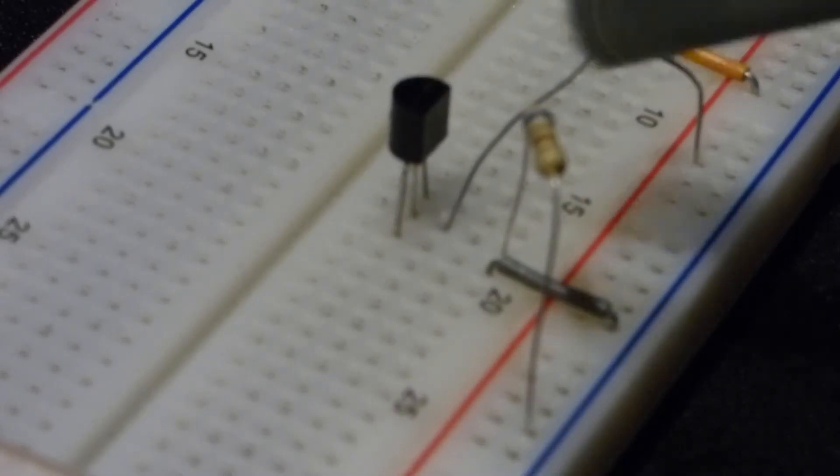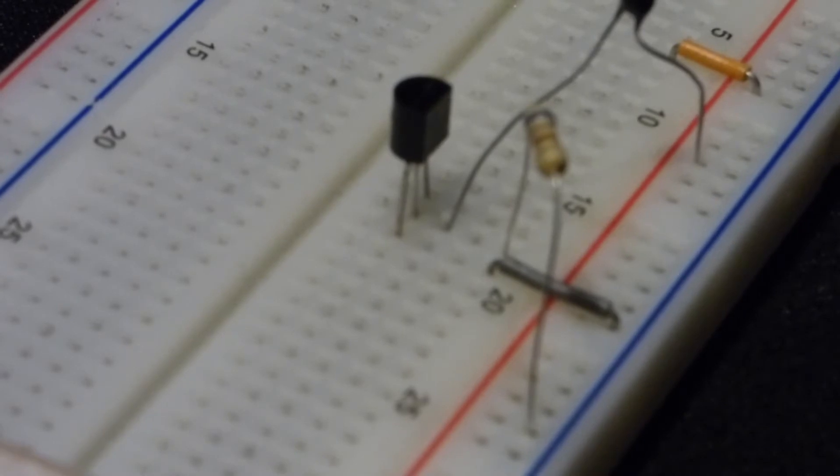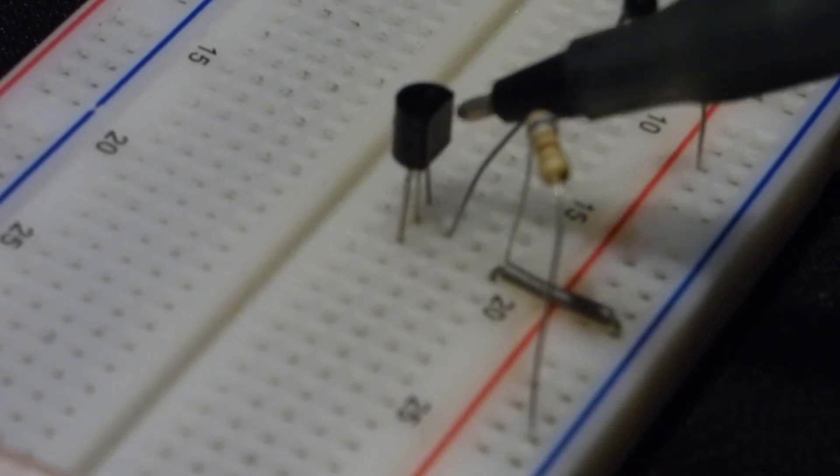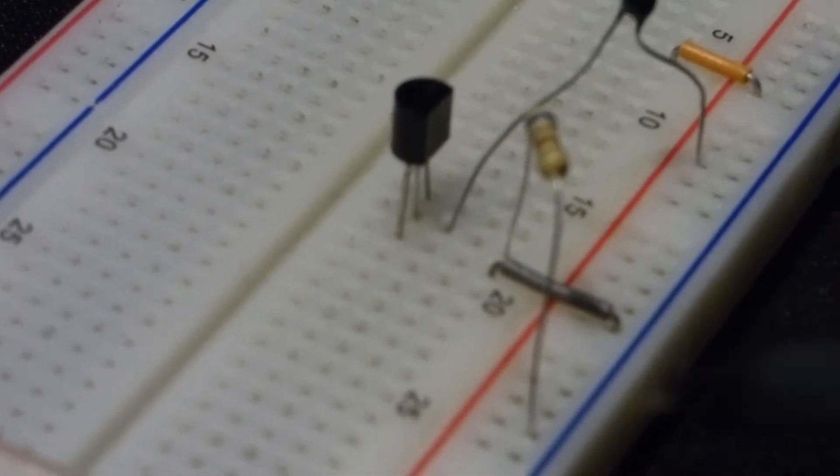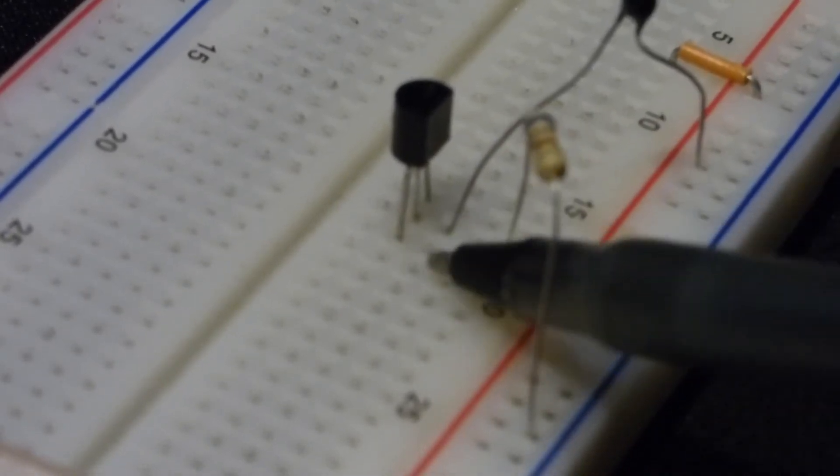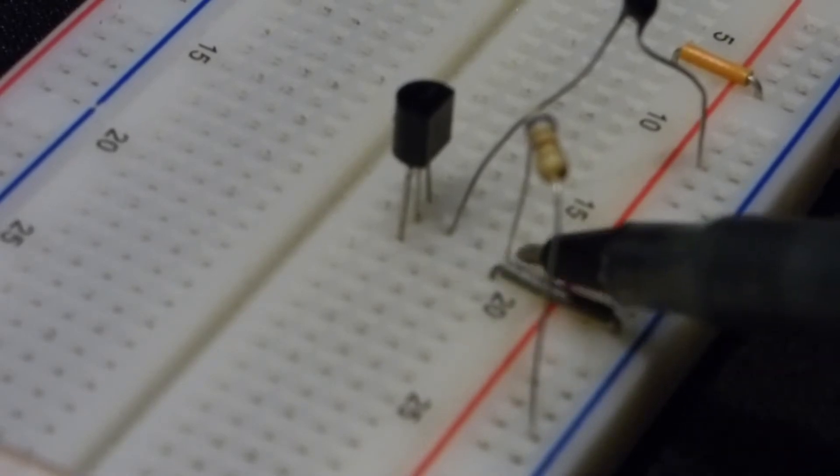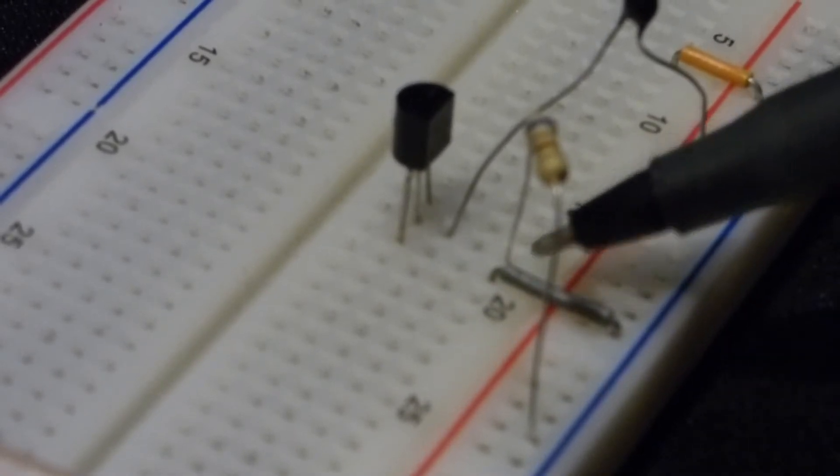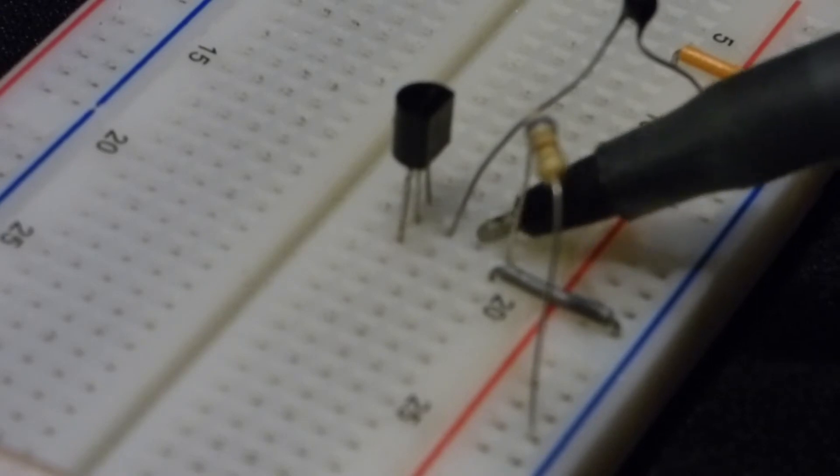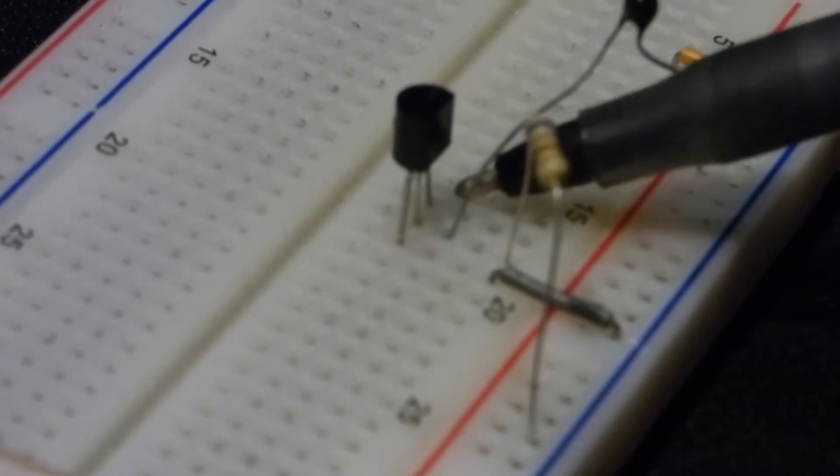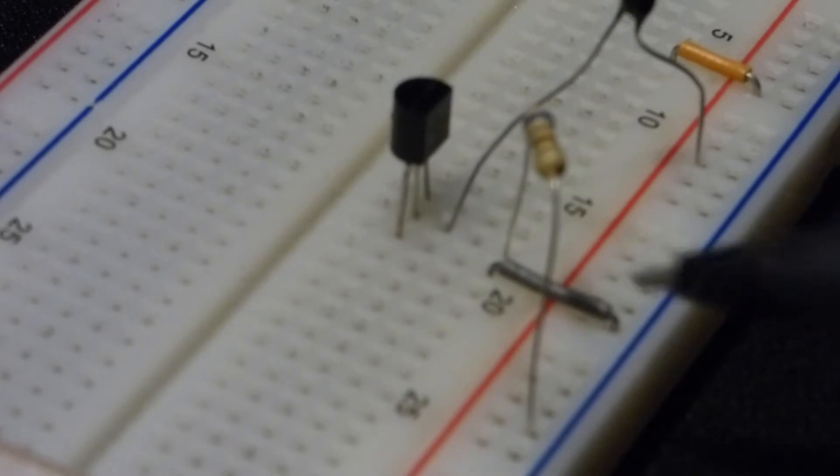So here we have the transistor in the board. This is a 2N2222, an NPN type transistor. Flat side's over here to the right. So at the bottom we have the emitter. In the middle we have the base. That's where the resistor and the thermistor come together. And up on top is the collector.